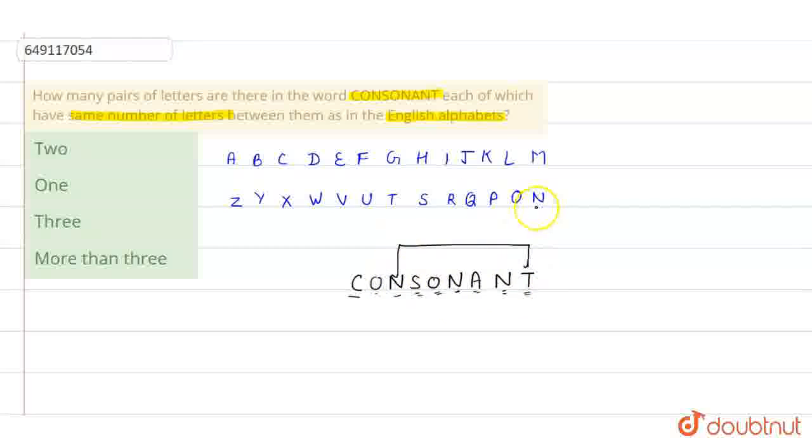In English alphabet, there is a number of letters here. Here is T. 1, 2, 3, 4, 5. So, here is the number of pairs. 1, 2, 3, 4, 5. Here is the number of pairs. N and T. In English alphabet, there is one pair.